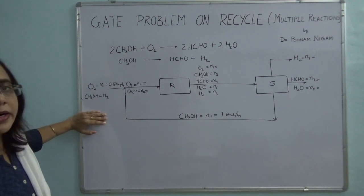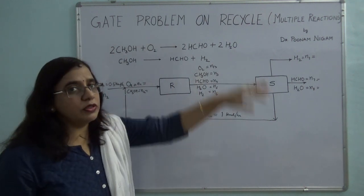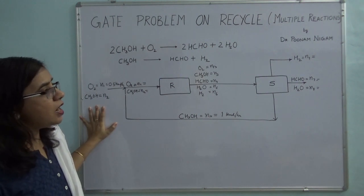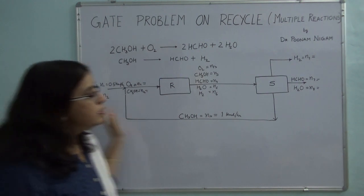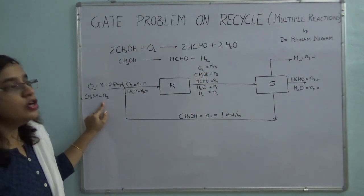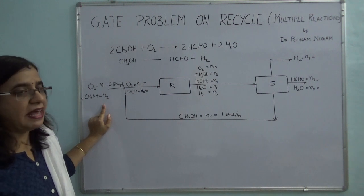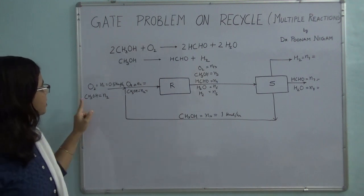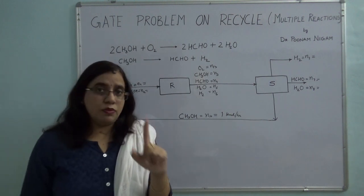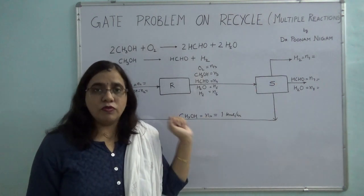Let's start by finding the degree of freedom on the overall system using atomic species balance. There are 4 variables and 3 independent atomic species balances — carbon, hydrogen, and oxygen. So the degree of freedom is 1, meaning we cannot solve the overall system directly.